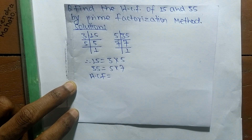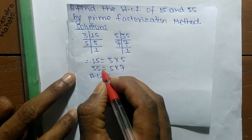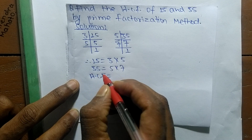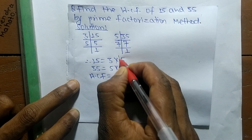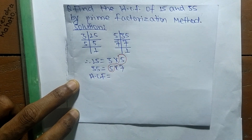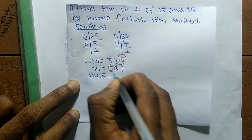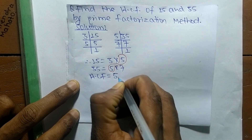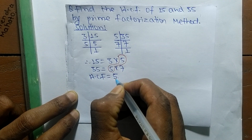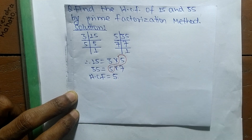We find the common factors in the prime factors of 15 and 35. The common factor here is 5, so the highest common factor is equal to 5. That's all for today — thanks for watching.